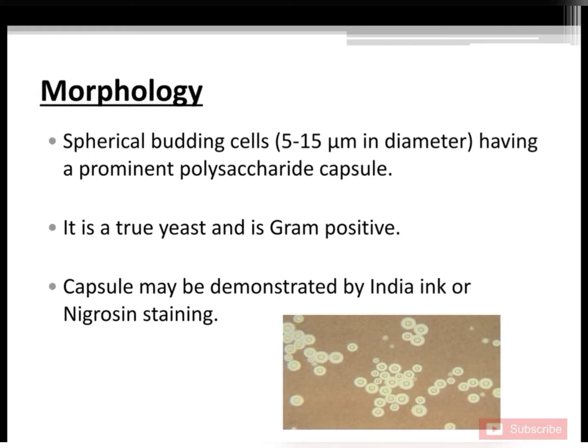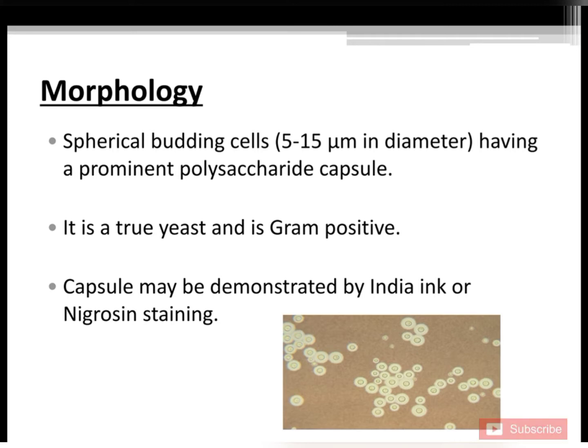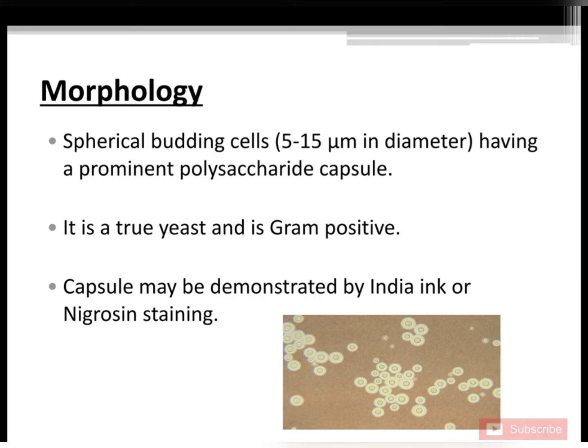Morphology: Cryptococcus neoformans appears as spherical budding cells, 5 to 15 micrometers in diameter, having a prominent polysaccharide capsule. It is a true yeast and is gram-positive.